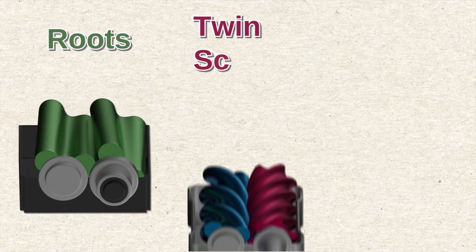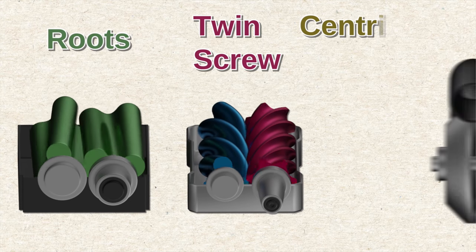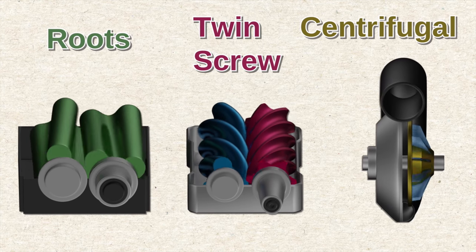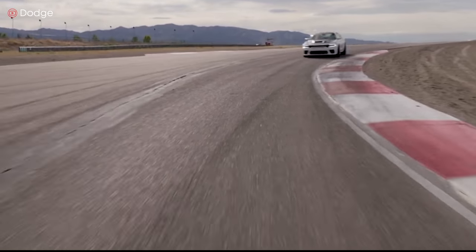Roots and twin screw superchargers draw air in by the use of different types of meshing lobes, where the centrifugal supercharger uses an impeller. All three types give your car a boost, but they differ in size and efficiency. Let's dive in and take a look at each.